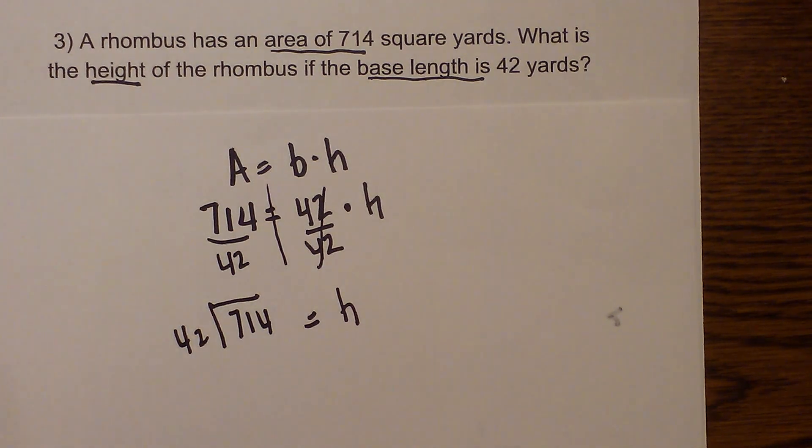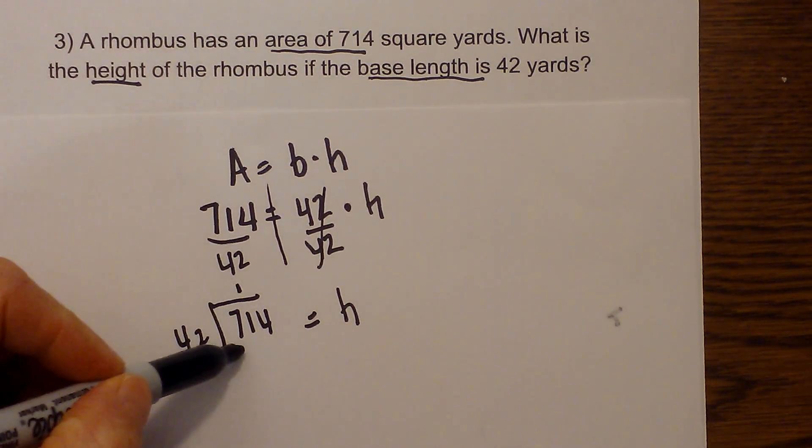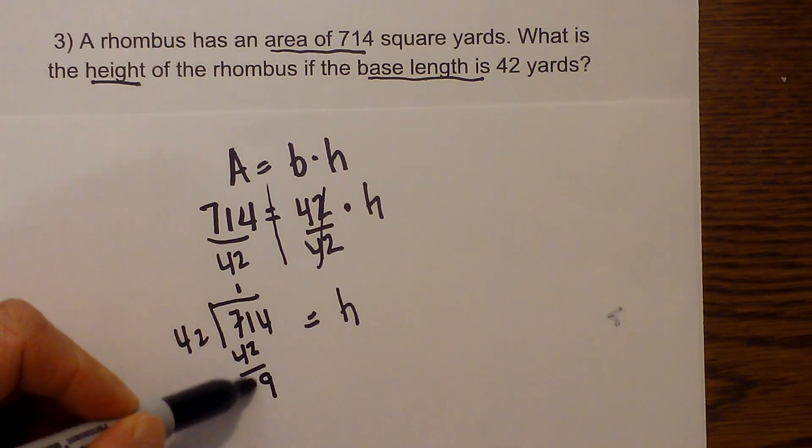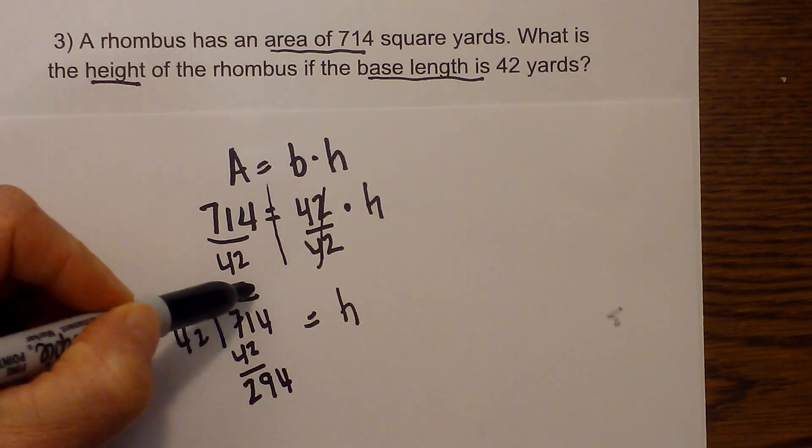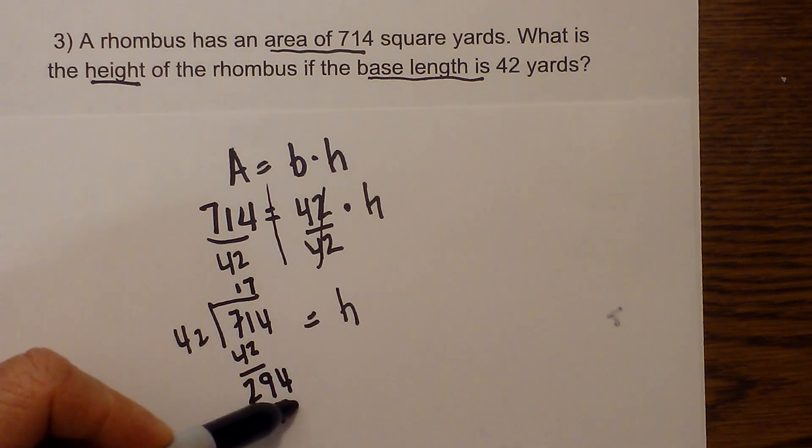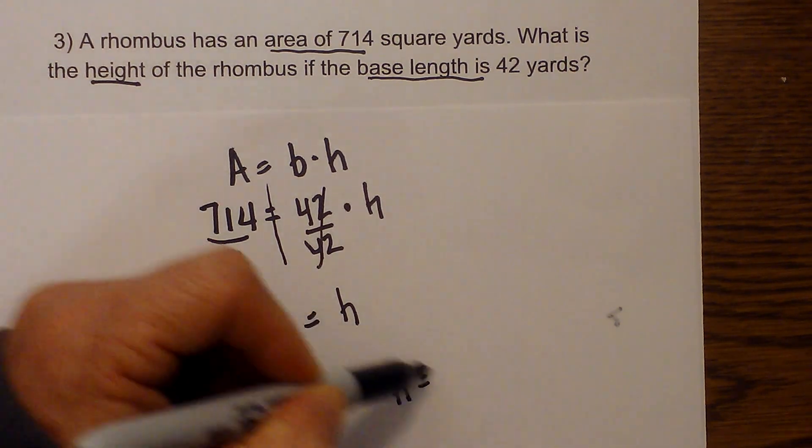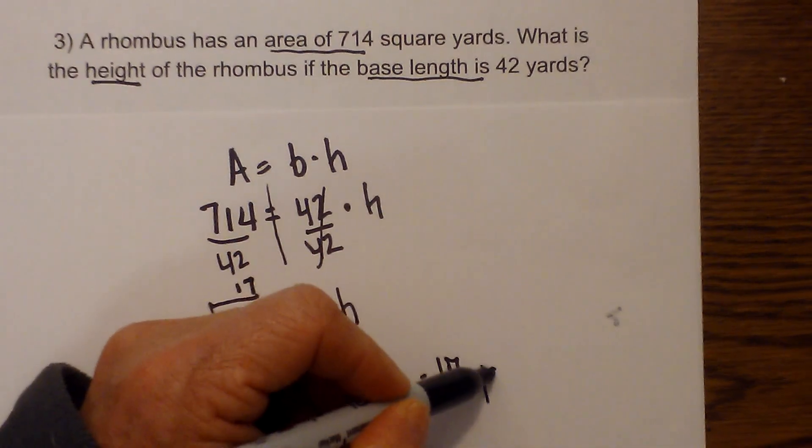So now I just merely divide these. 42 will go into 71 one time so we have 42. 42, this becomes a 29, take 1 away that becomes 29, so that is 294 and 42 times 7 is 294. So the height equals 17 and what is my unit of measure? It is yards.